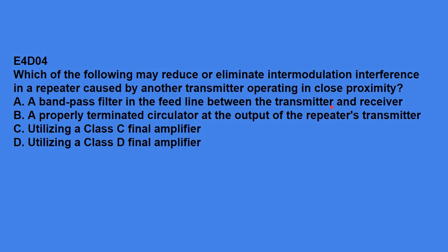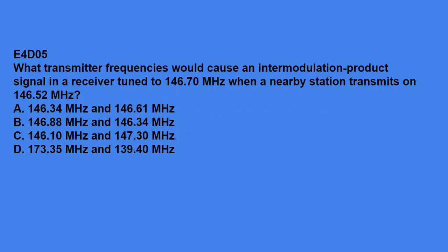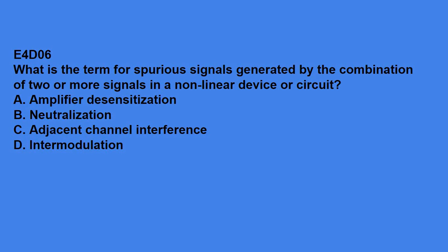E4D04, which of the following may reduce or eliminate intermodulation interference in a repeater caused by another transmitter operating in close proximity? Answer is, a properly terminated circulator at the output of the repeater's transmitter. E4D05, what transmitter frequencies would cause an intermodulation product signal in a receiver tuned to 146.700 when a nearby station transmits on 146.520 MHz? Answer is, 146.34 MHz and 146.61 MHz. E4D06, what is the term for spurious signals generated by the combination of two or more signals in a non-linear device or circuit? Answer is, intermodulation.